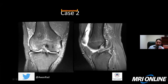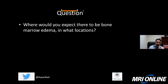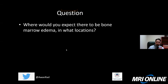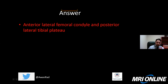Case two: this patient has status post ACL repair, with complete rupture of the graft visible. Where would you expect the bone marrow edema to be? The answer is the anterior lateral femoral condyle and posterior lateral tibial plateau — the pivot shift mechanism. This is exactly the same pattern seen even in native knees with ACL tears, resulting from the pivot shift mechanism of injury.